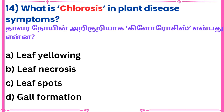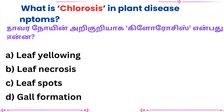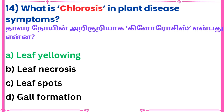Fourteenth question: What is chlorosis in plant disease symptoms? Answer: Leaf yellowing.